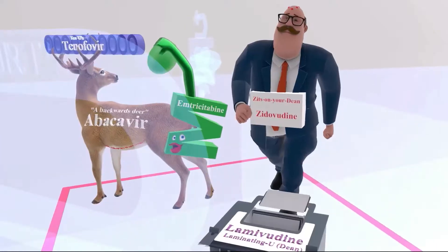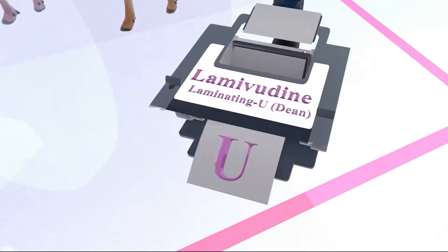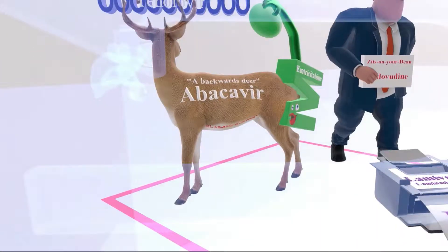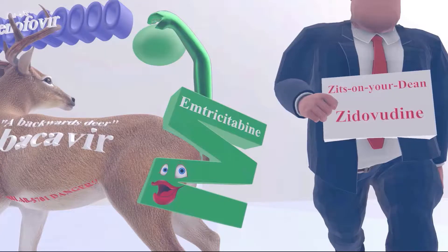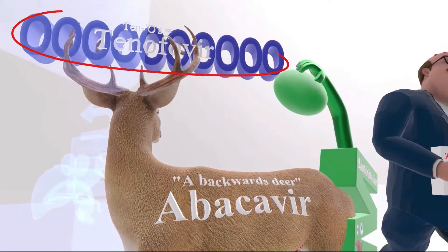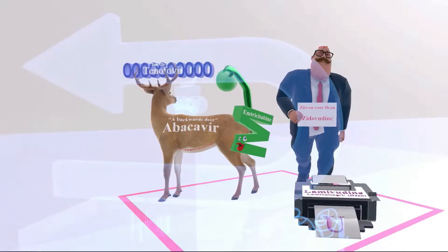The dean didn't realize he was standing next to a backwards deer — a backwards deer for abacavir. On the back of the deer there's an M on its side holding a bean — 'M on side with a bean' for emtricitabine. On top of the deer there are ten O's — 'ten O' for tenofovir. So the NRTIs are zidovudine, lamivudine, abacavir, emtricitabine, and tenofovir. All of these drugs competitively inhibit nucleotide binding to reverse transcriptase and terminate the DNA chain. Note that tenofovir is a nucleotide, while the others are nucleosides.